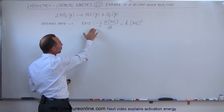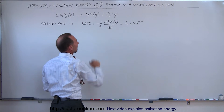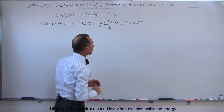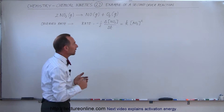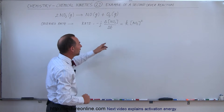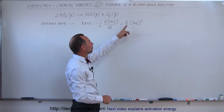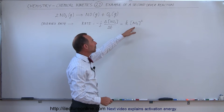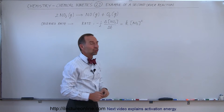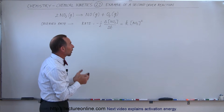The rate is equal to minus one-half times the change in the nitrogen dioxide concentration divided by the change in time, and it equals the rate constant times the concentration of nitrogen dioxide squared.